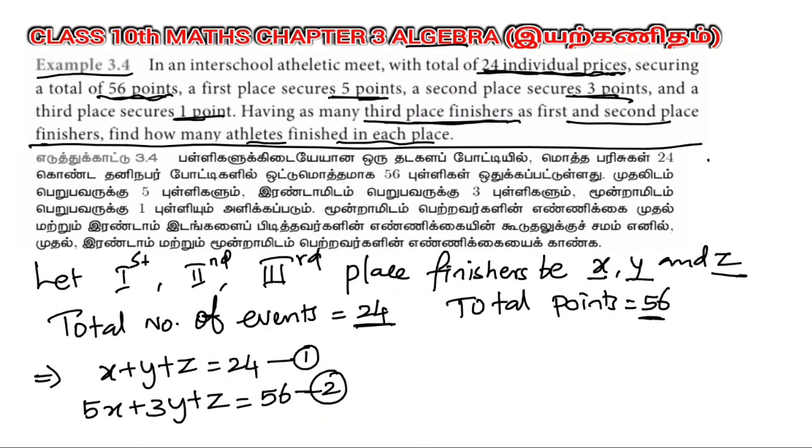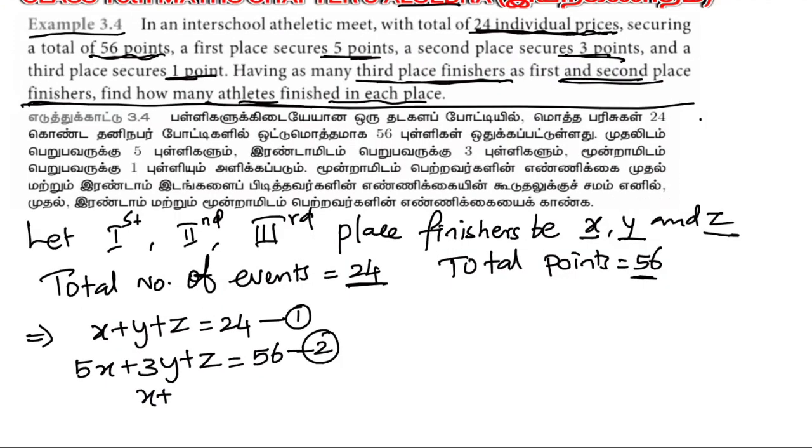Having as many third place finishers as first and second place finishers, that's why x plus y equals z. This is equation number 3.